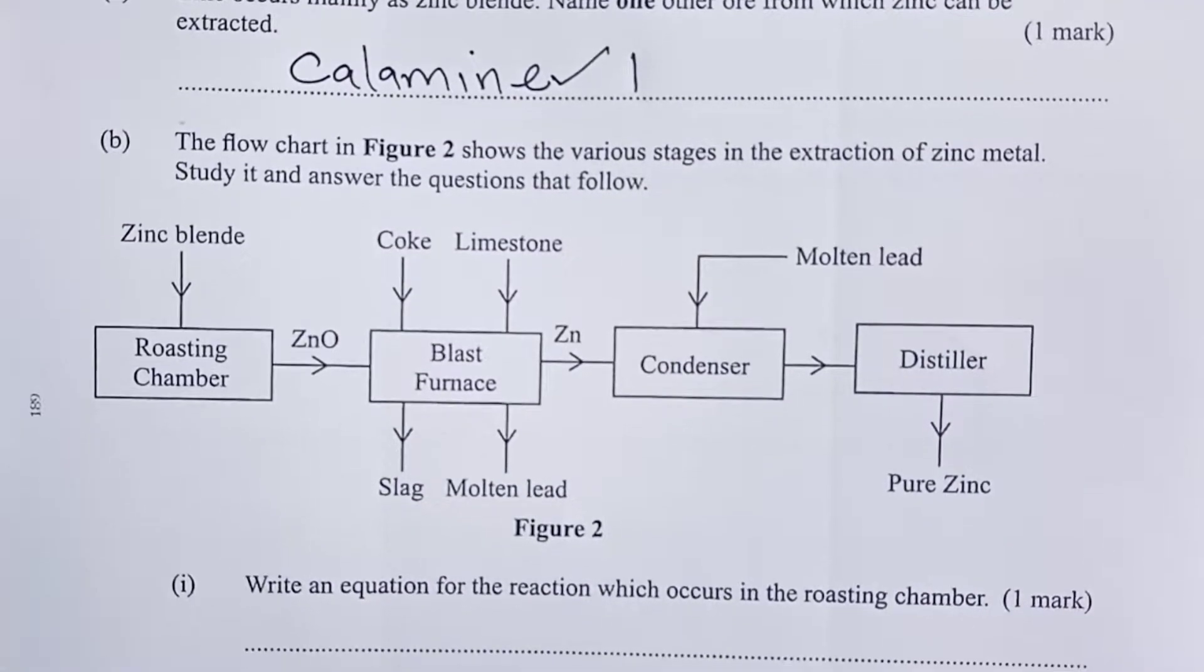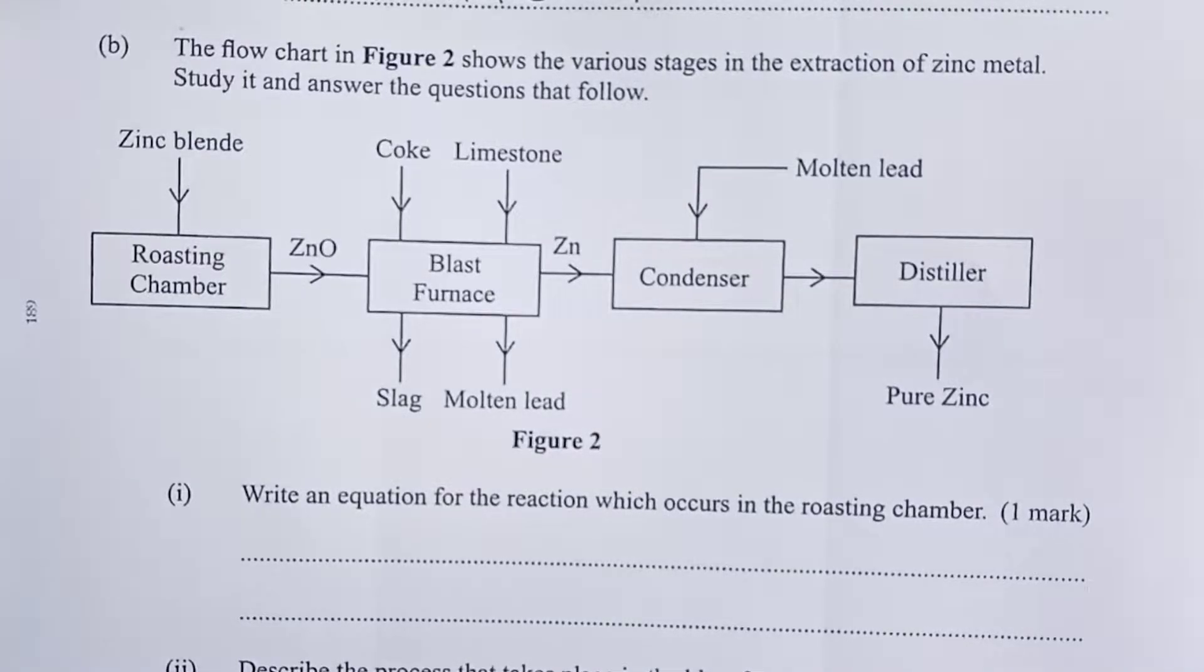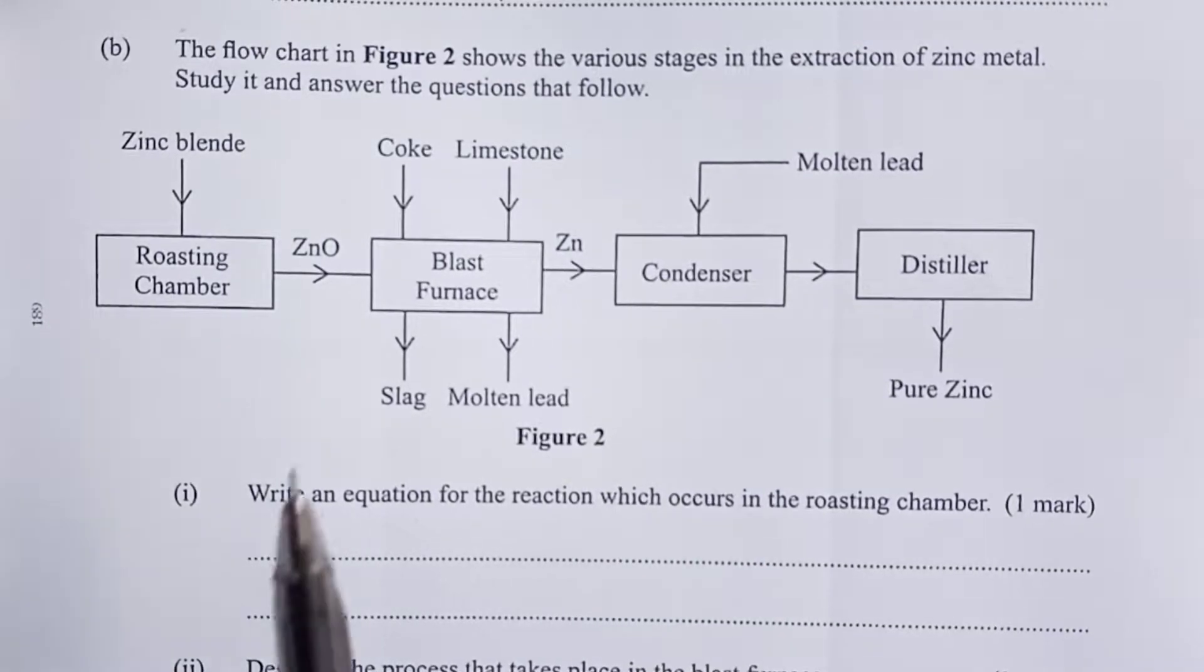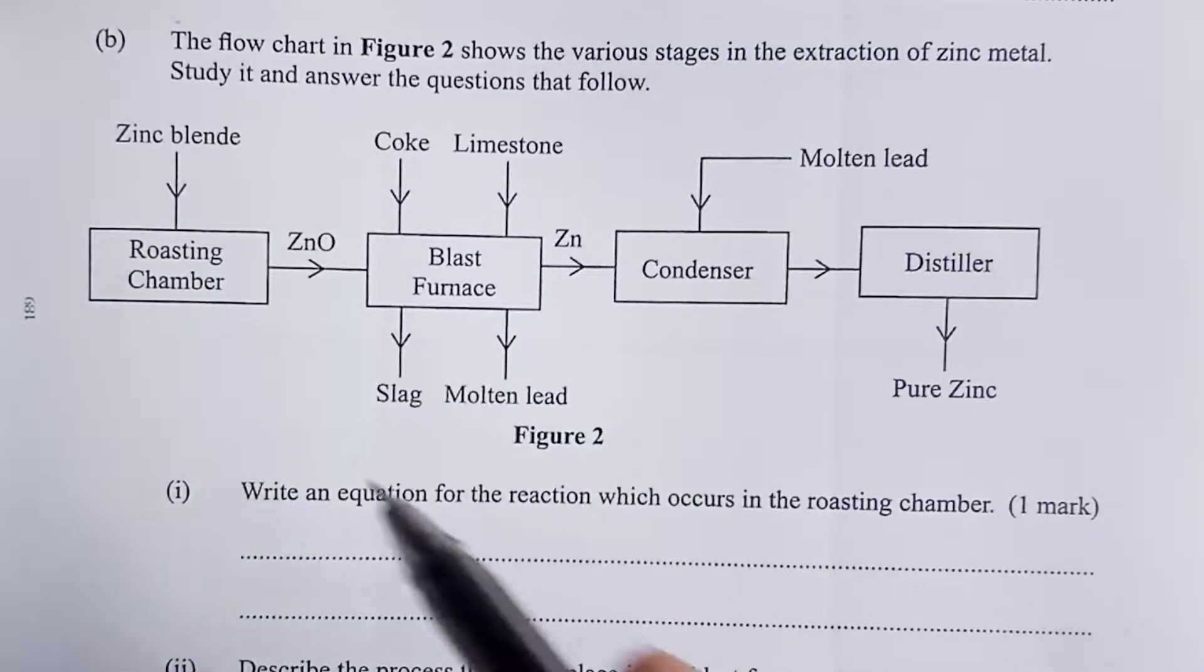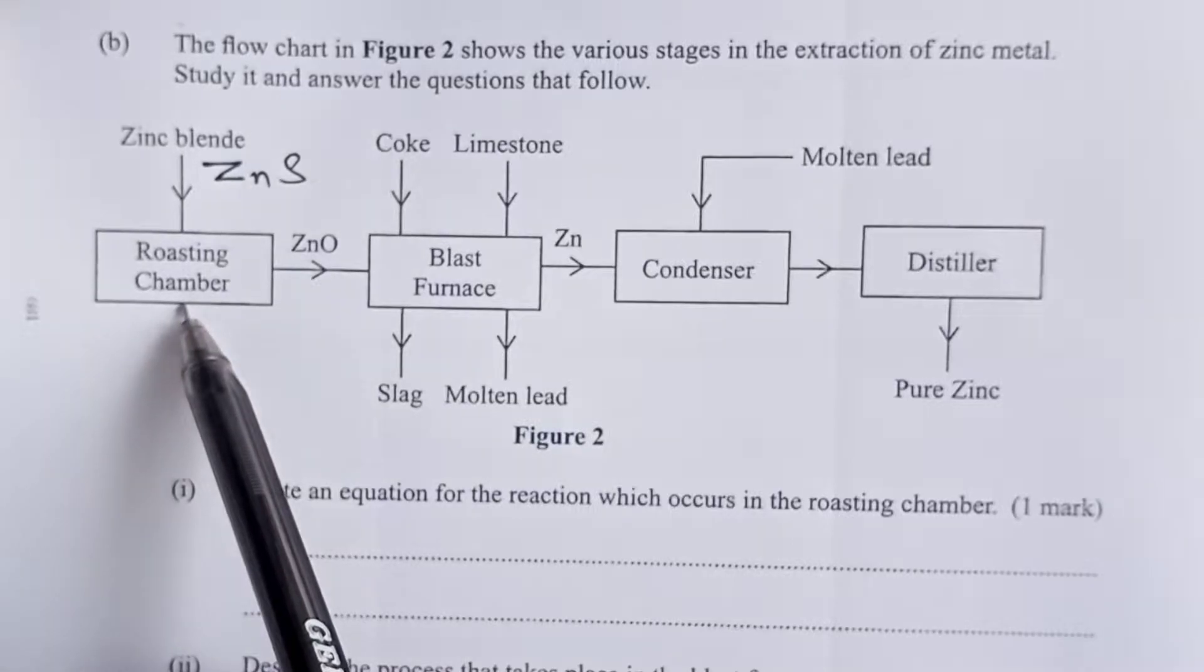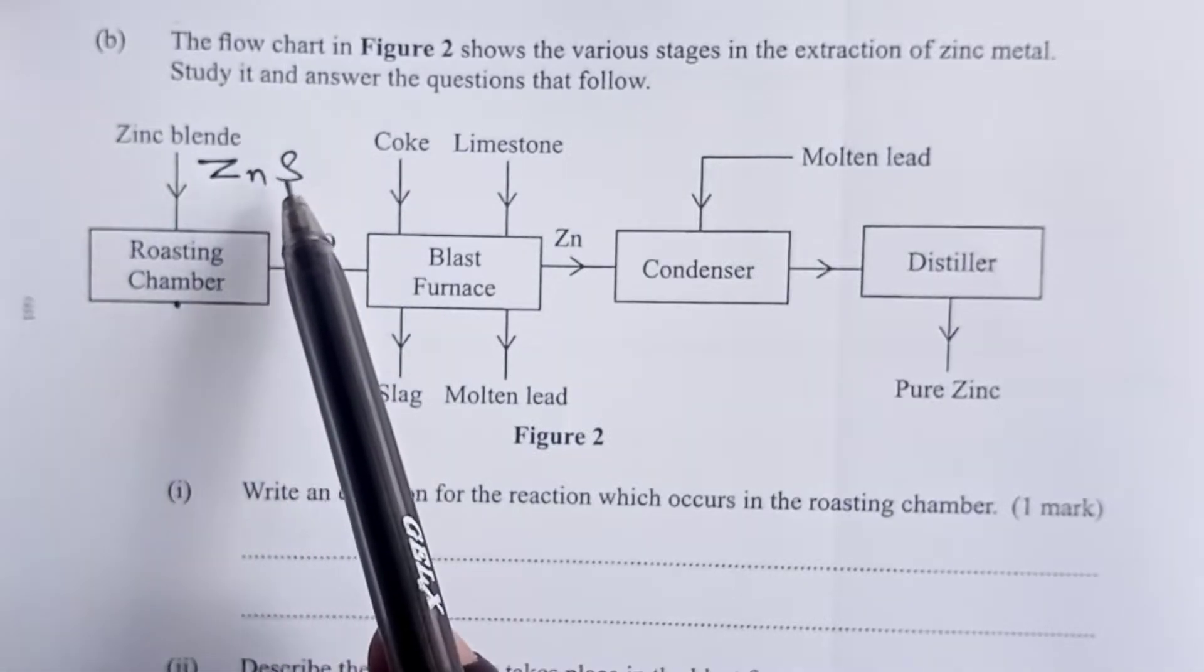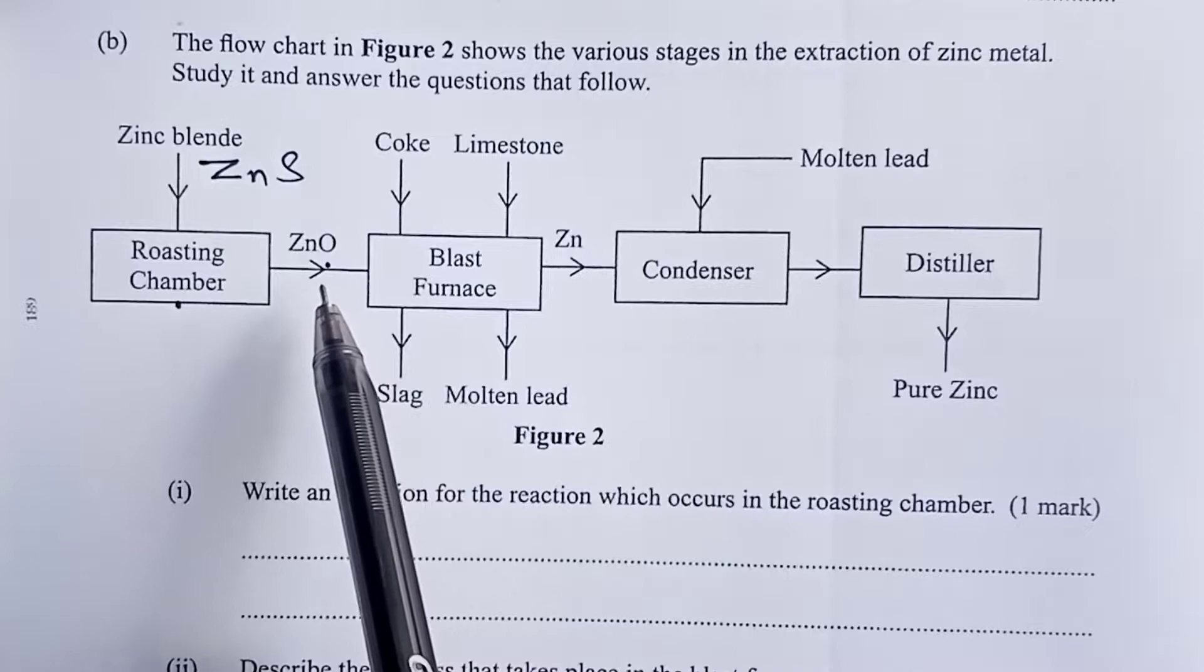Study the flow chart in figure 2 and answer the questions that follow. In figure 2, we have zinc blend which we all know is actually zinc sulfide being roasted here. Roasting actually means we are burning it in oxygen and then we are able to get zinc oxide and some sulfur-4-oxide gas.